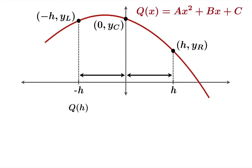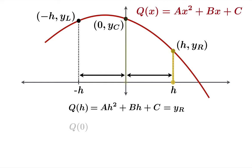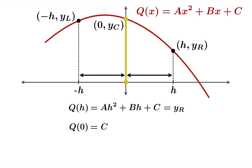So q of h, at the right endpoint — if you plug h into your formula for q — you get yr. So you get the equation: ah squared plus bh plus c equals yr. That's one relationship between the coefficients and the given quantities. And q of 0 is really easy to calculate using the formula: that's just going to be c. So it turns out that c has to equal yc.